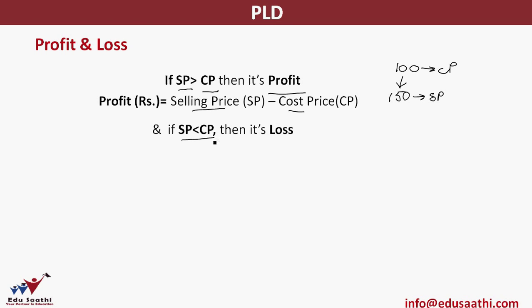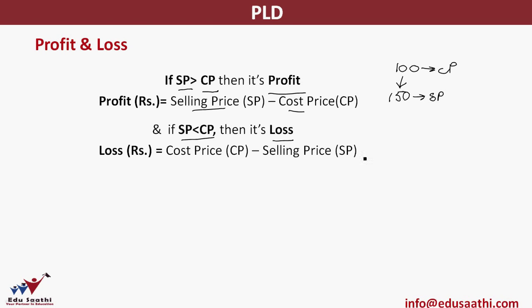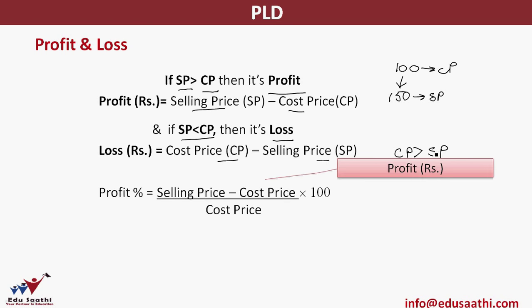The second scenario: if the selling price is less than the cost price — that means the price at which the shopkeeper bought the item was more and the price at which he sold the item is less — it's a case of loss. The loss will be equal to the difference between the cost price and the selling price. In case of loss, your cost price is more than your selling price.